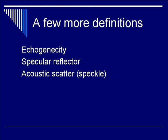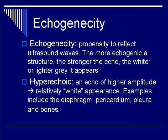Before we delve into the subject of ultrasound artifacts, there are a few more definitions to cover. First is echogenicity, then specular reflectors, and finally acoustic scattering — otherwise known as speckle. Echogenicity is the propensity to reflect ultrasound waves. The more echogenic a structure is, the stronger the returning echo.